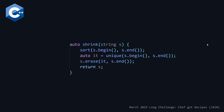Looking at the shrink function — it's pretty straightforward. In order to get the unique characters in a string, you sort it and then use the algorithm unique, which removes all duplicate adjacent items. Once sorted, you end up with just each unique vowel. Then we remove the remaining characters at the end of the string and return s.